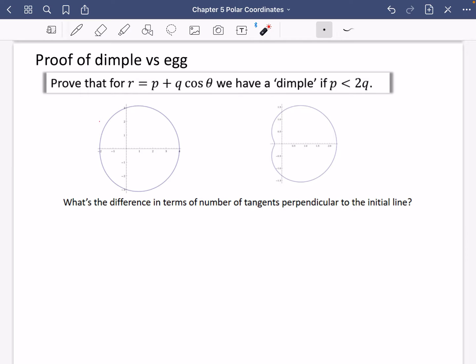And I think this is just kind of an interesting way to end the chapter. I can't imagine them asking this kind of proof, but who knows? Stranger things have happened in these exams. So it says, what is the difference in terms of the number of tangents perpendicular to the initial line? So we're talking about vertical lines here.